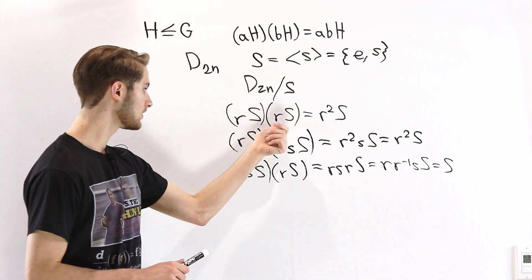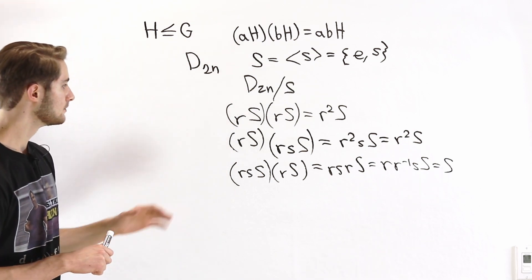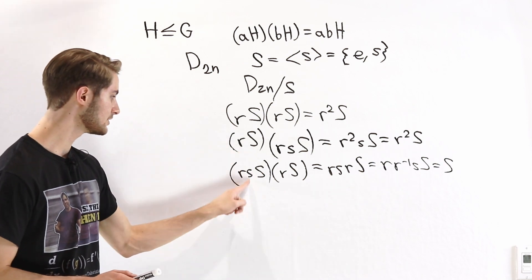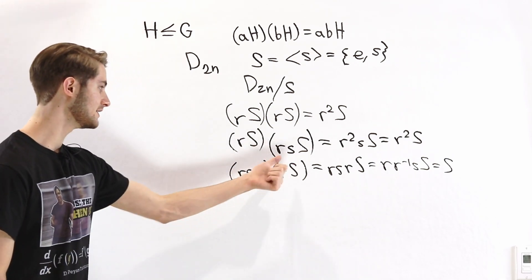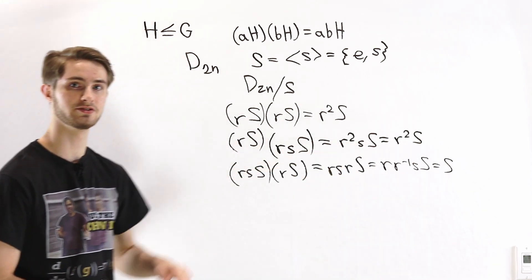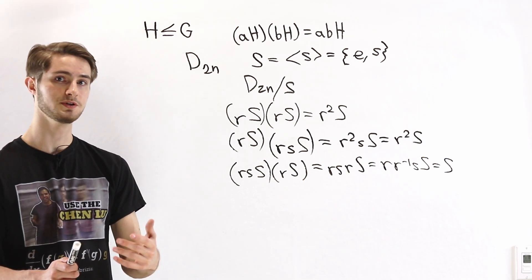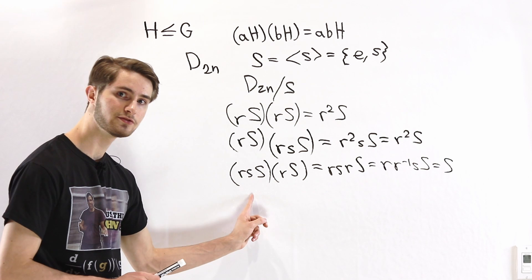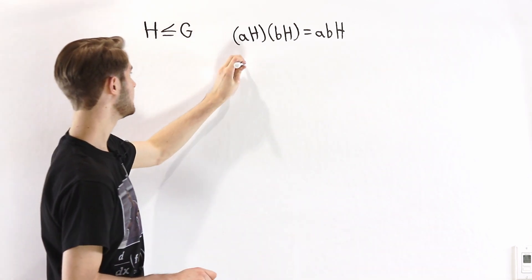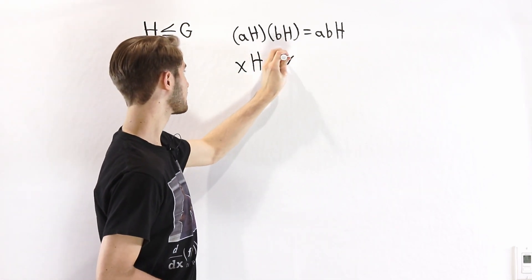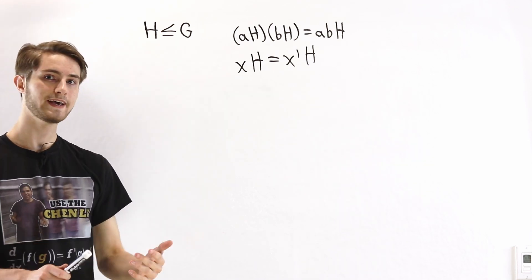When looking at a coset, we call elements like R and RS coset representatives — specific elements chosen to represent an entire set. The problem with multiplication here is that sometimes choosing different coset representatives for the same coset gives different results. It wasn't a big deal when we chose a different representative for the second element, because the S just gets absorbed into the subgroup. But if we choose a different representative for the first factor, it can cause problems. In order for multiplication to be well defined, we have to make sure that picking a different coset representative for the first factor doesn't change the product.